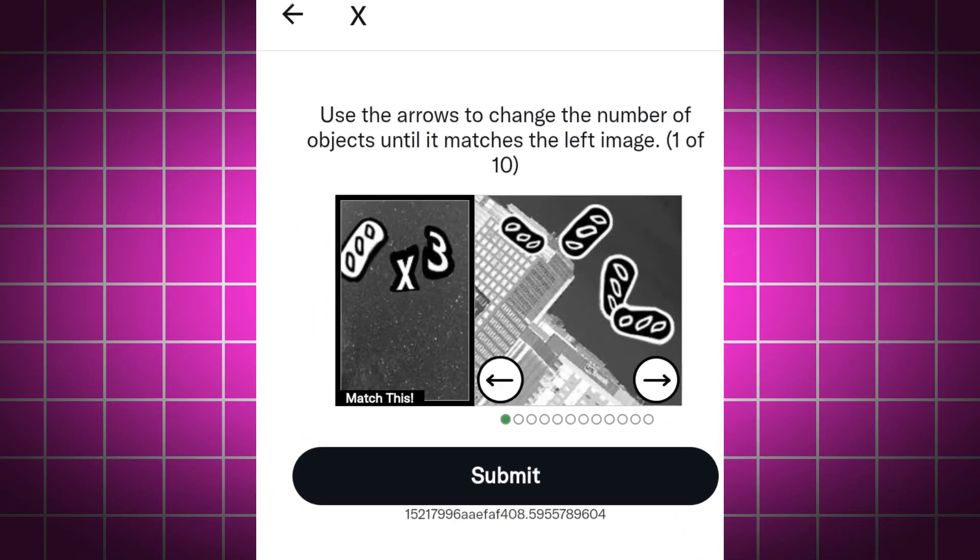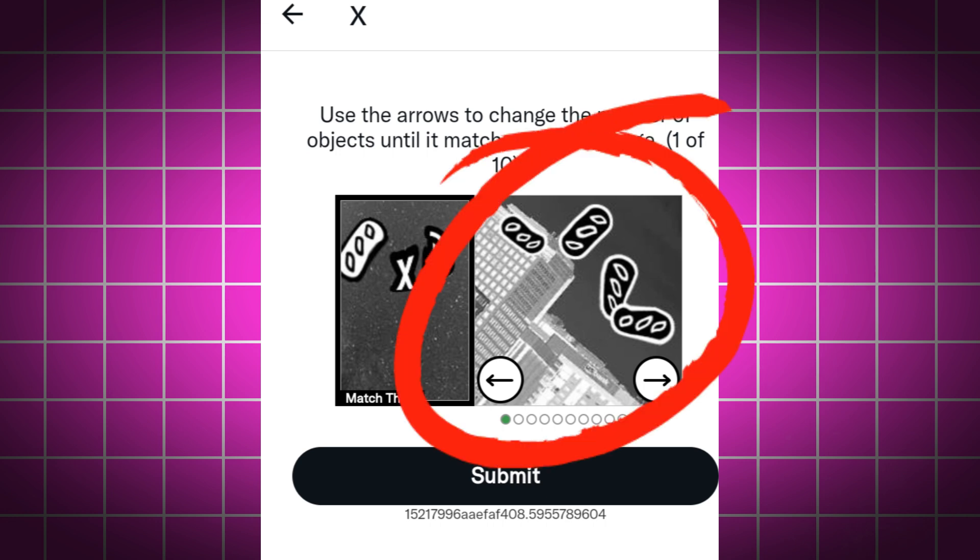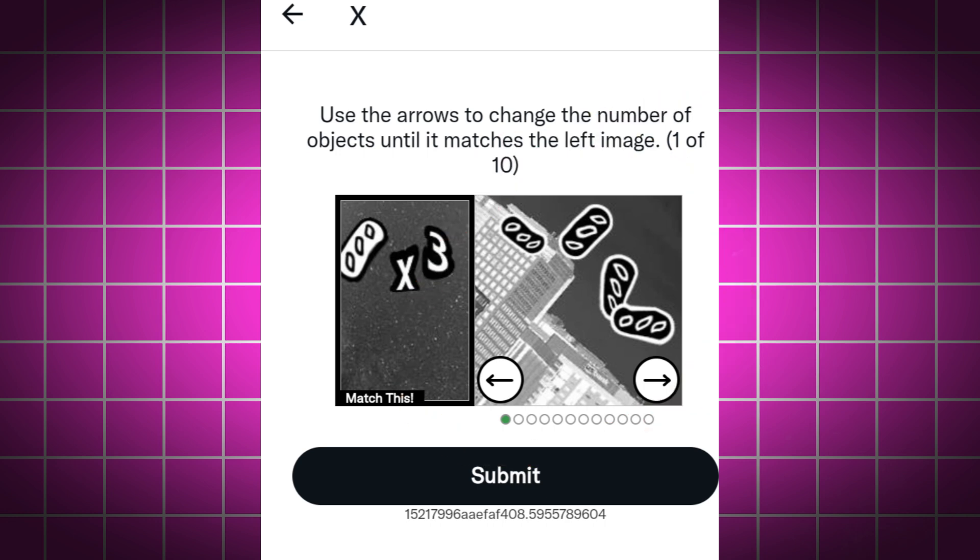First of all, we have to read the instruction carefully. Here you can see the message: use the arrows to change the number of objects until it matches the left image. Here in the right image we can see an object, whatever you call it. We have to match it with the left image. But how? There's the question.